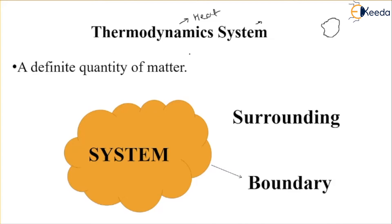And what is a thermodynamic system? Any system which is under the application of heat. So thermodynamic system we can define as a quantity of matter in space which is subjected to any kind of heat or which is subjected to temperature and temperature difference. In simple words, system is a definite quantity of matter related to temperature, temperature difference, heat, heat transfer, and transfer of energy into work.